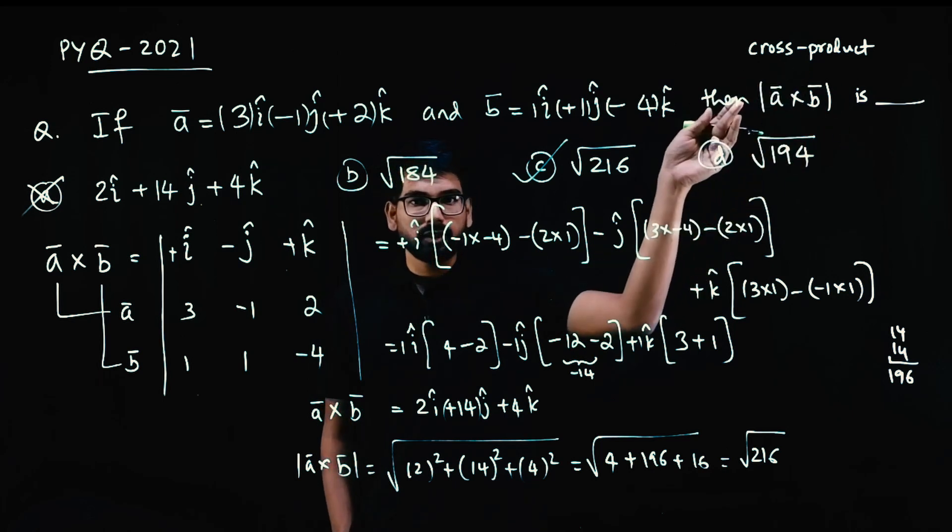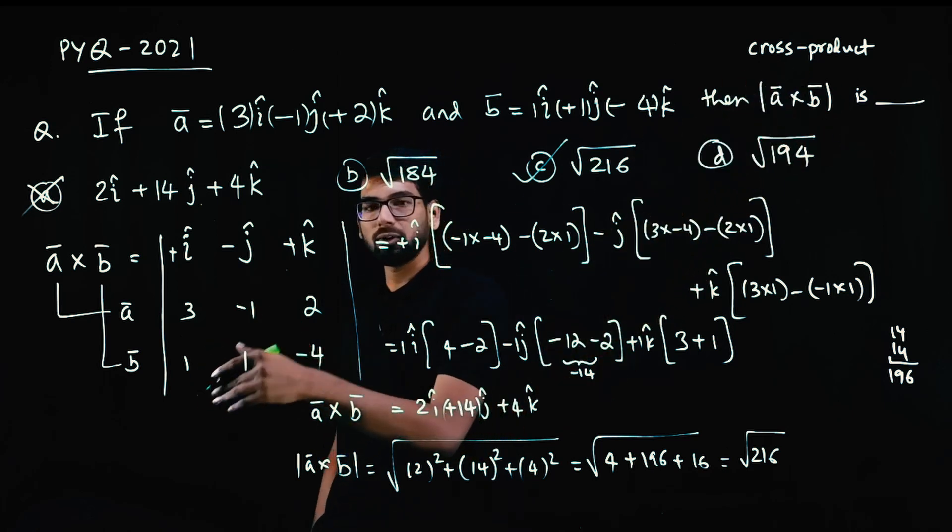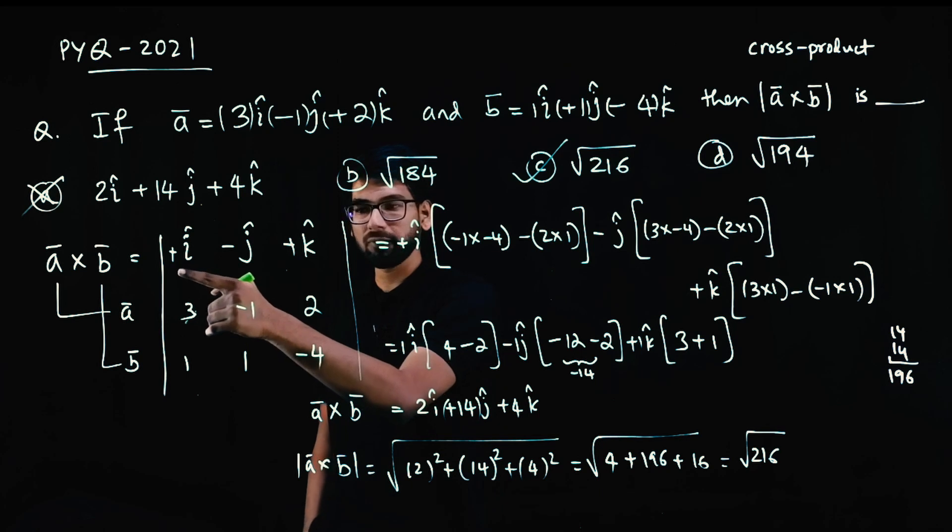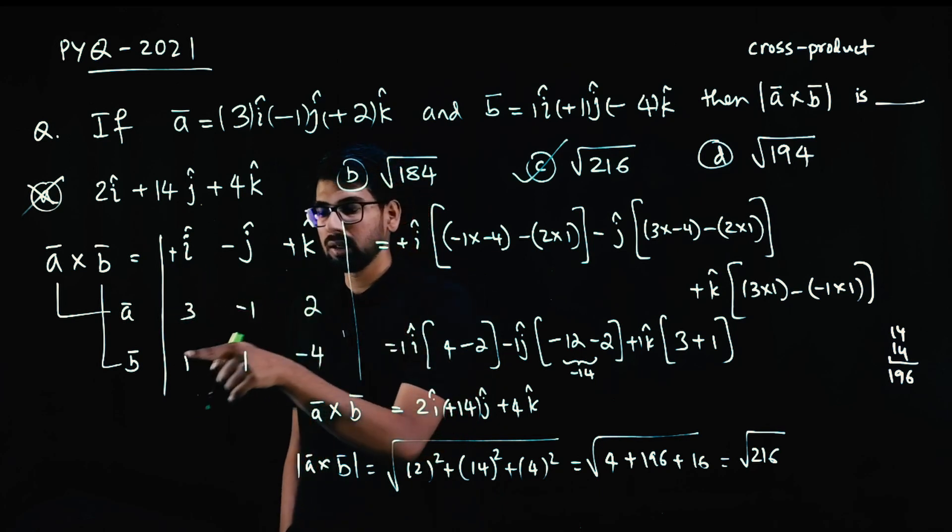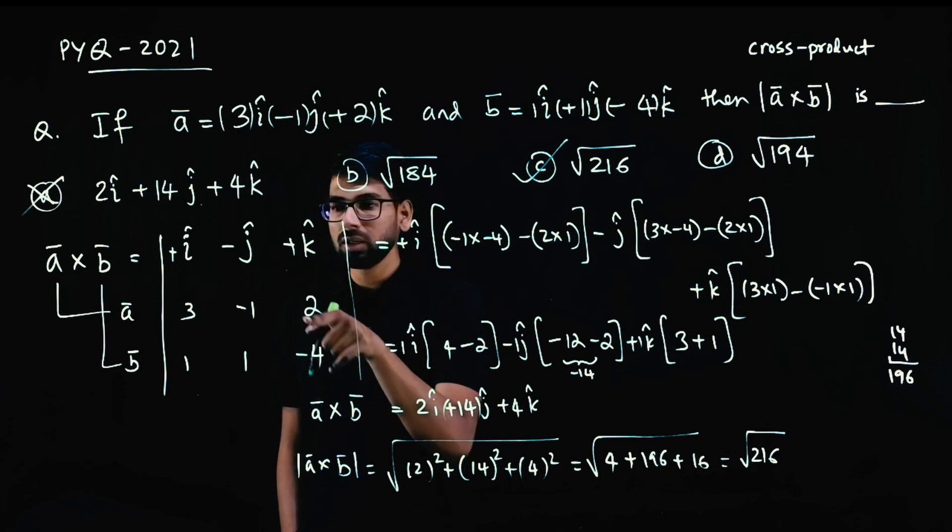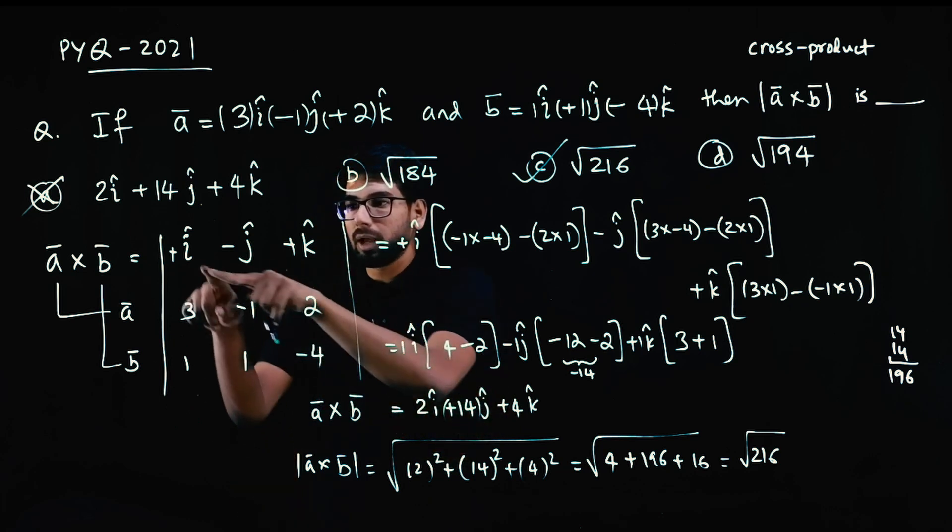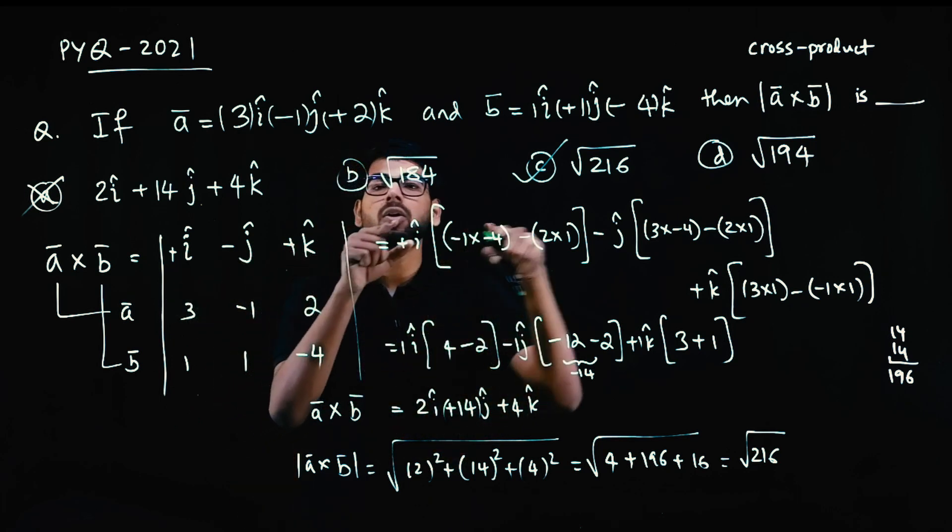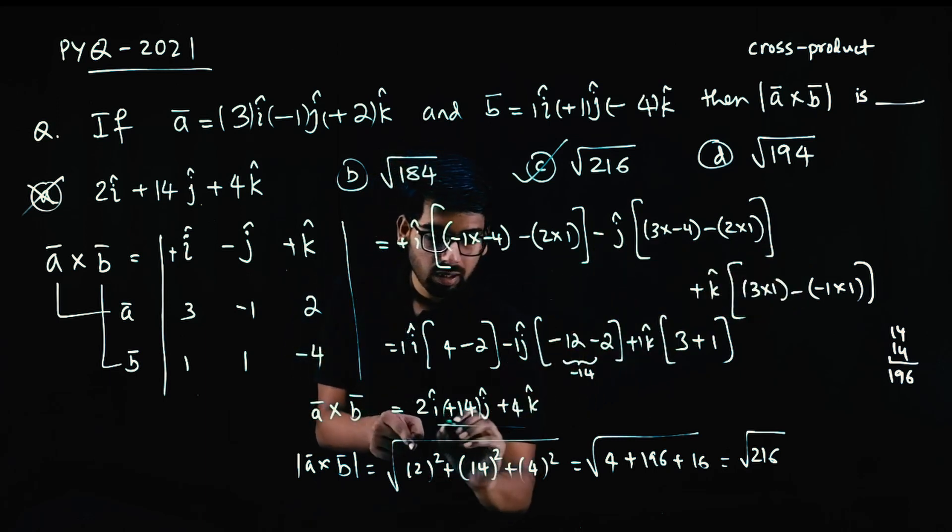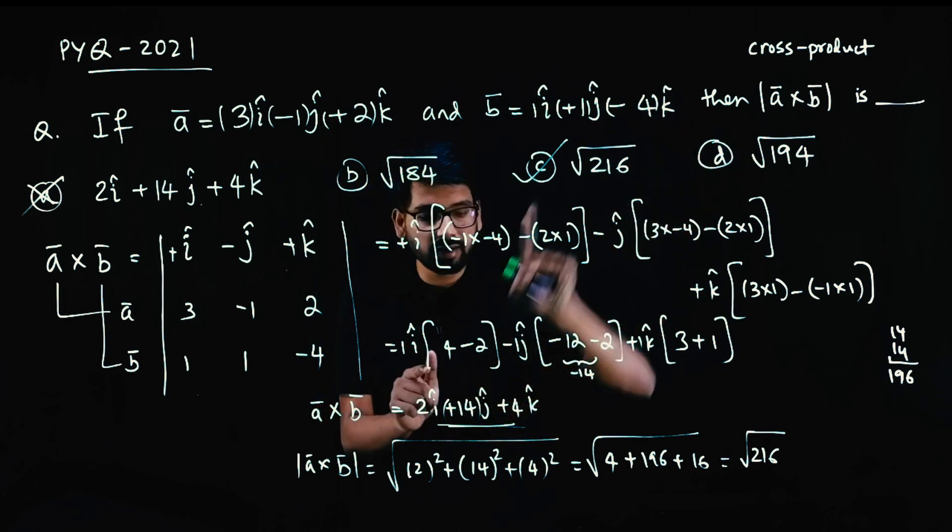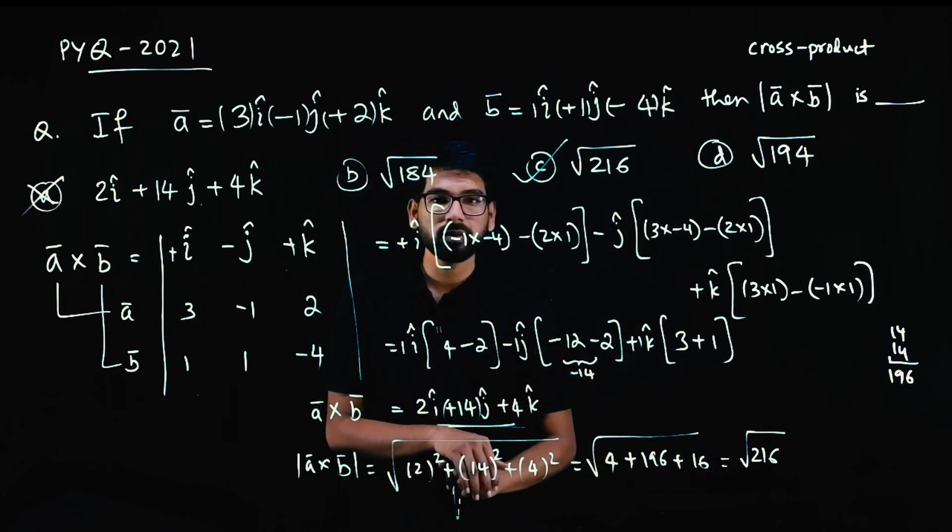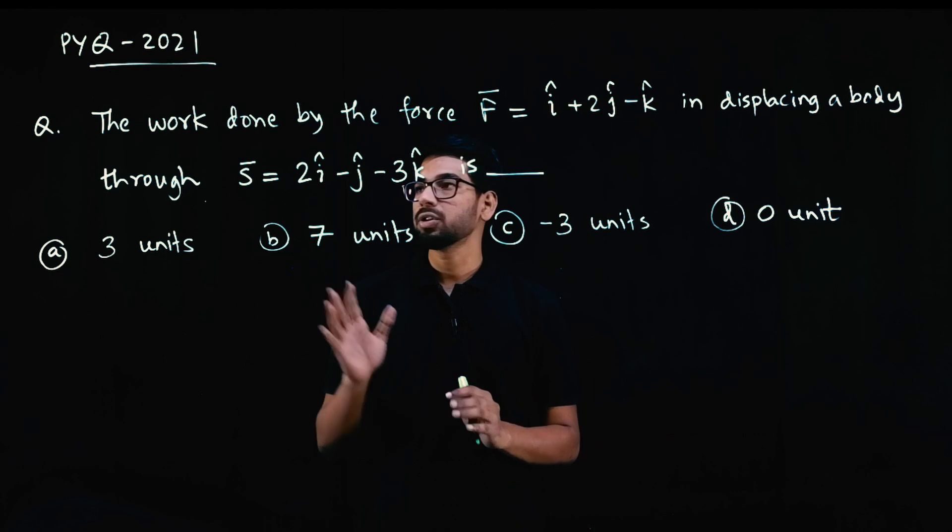Cross product, we solve the determinant. First row is ij k. Second row is a vector coefficients. Third row is b vector coefficients. And you add plus minus plus symbol here and open the determinant. Once you solve you get a vector. Cross product result is a vector. That vector's magnitude is what we needed.